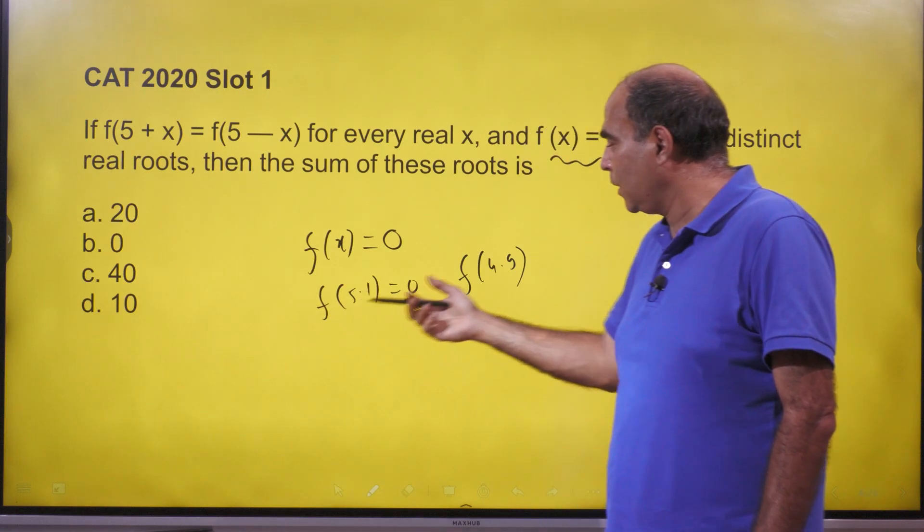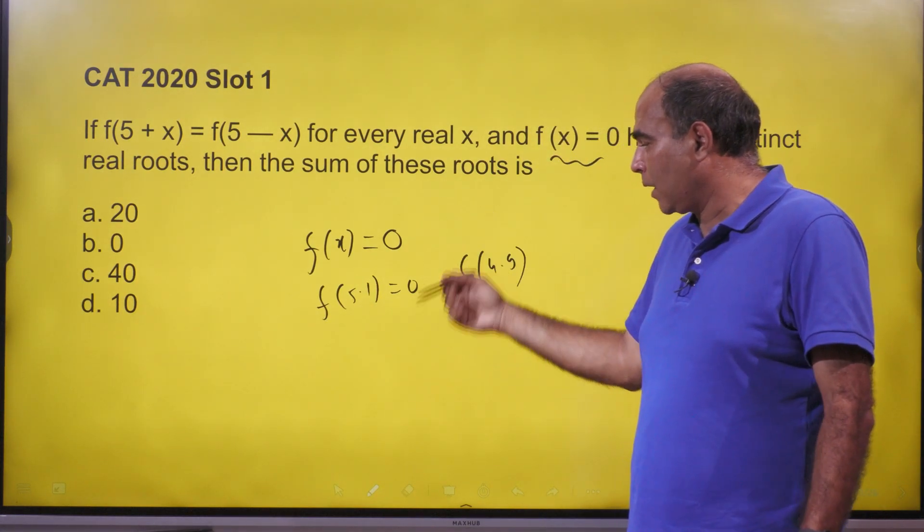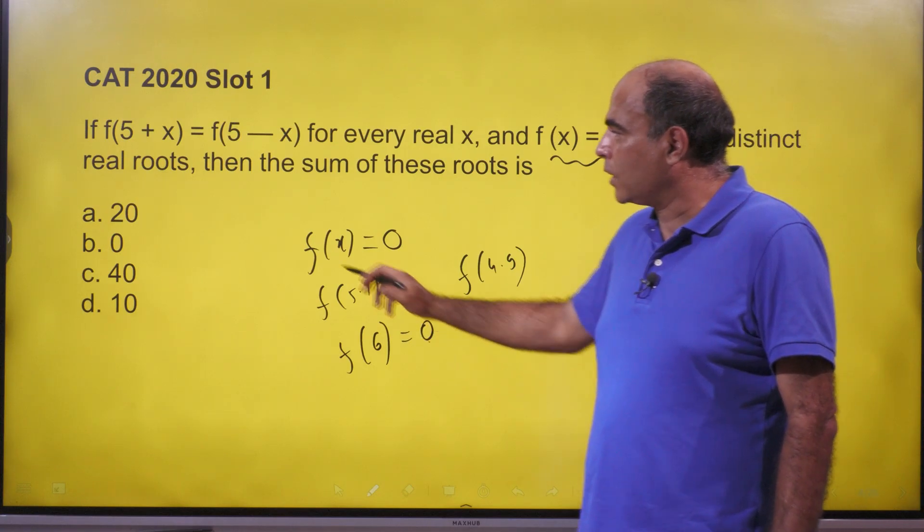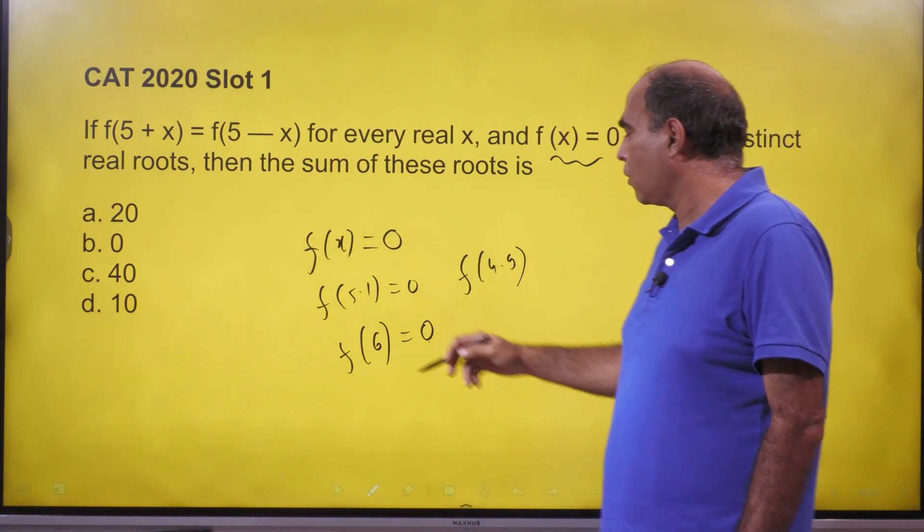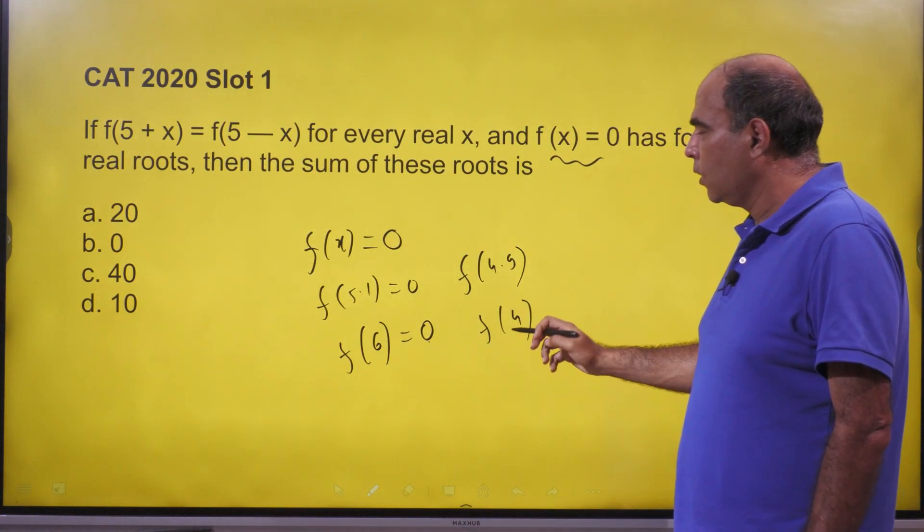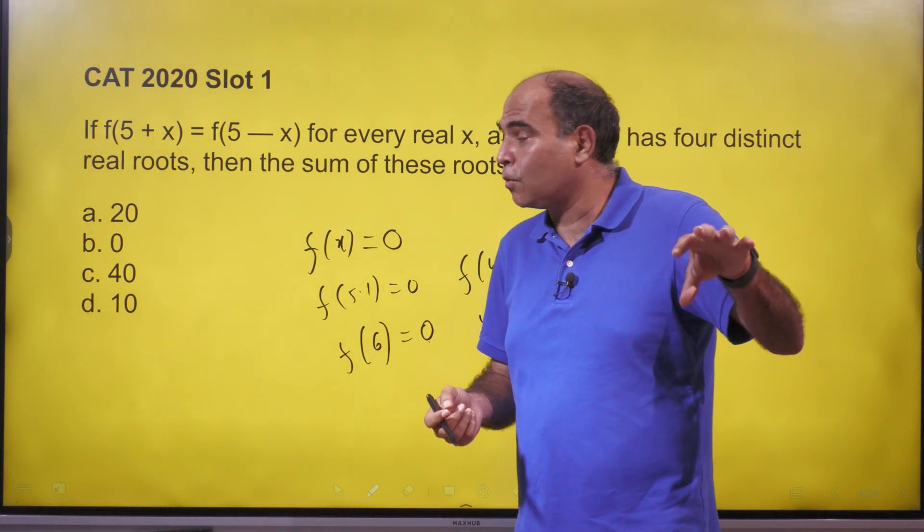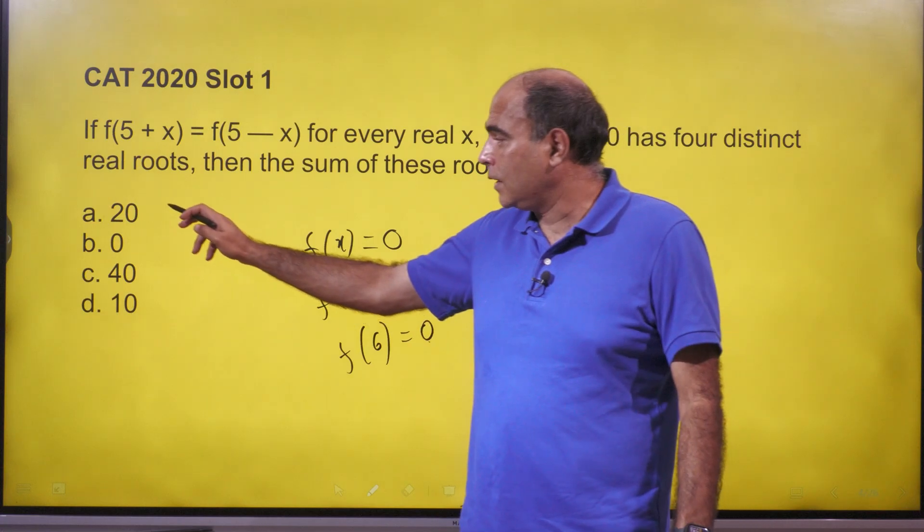And if I make another two roots, let's say if I make f(6) = 0, x becomes 1, and x becomes 1 here also. So then f(4) will also be zero. So both pairs of roots will have sum 10, so the sum of all the roots will obviously be 20, and that's the answer to this question.